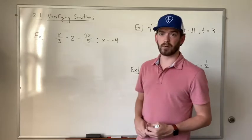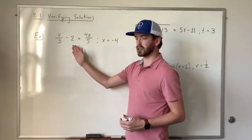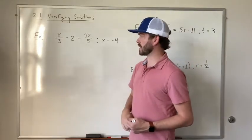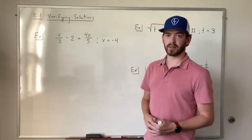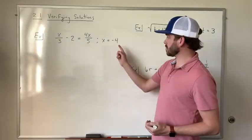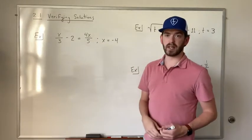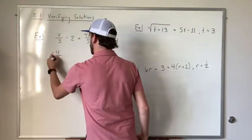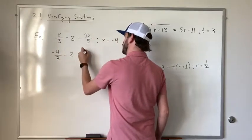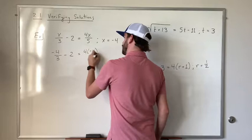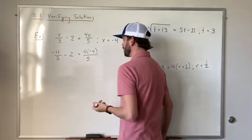So let's start up with this example. We have x over 3 minus 2 is equal to 4x over 5 and the solution that we've been given is x is equal to negative 4. So we're going to plug in negative 4 anywhere we see x and then we're just going to simplify both sides. So we have negative 4 over 3 minus 2 is equal to 4 times negative 4 over 5.